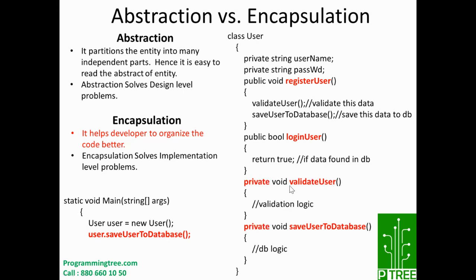To correct it, validate_user will be private and save_user_to_database will also be private, because register_user is ultimately going to call the validation and save_user_to_database internally. So validate_user and save_user_to_database are internal implementations of the User class and need not be exposed to the outside world. The proper implementation is done using encapsulation by restricting these methods using the private keyword.